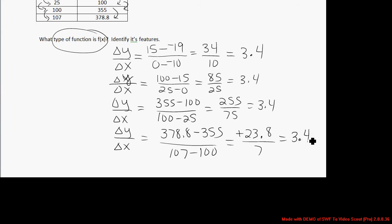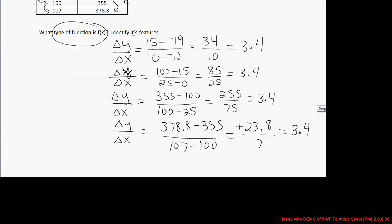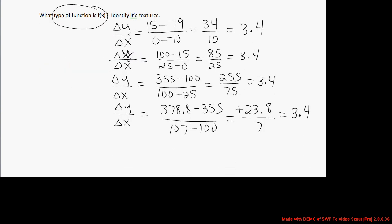And so we see from every single point traveling to any other point in the table, we have a constant rate of change of 3.4. So on this graph, if you go over 1, you go up 3.4, and you'll land back on the graph again. It's a line that is increasing over 1, up 3.4, over 1, up 3.4.